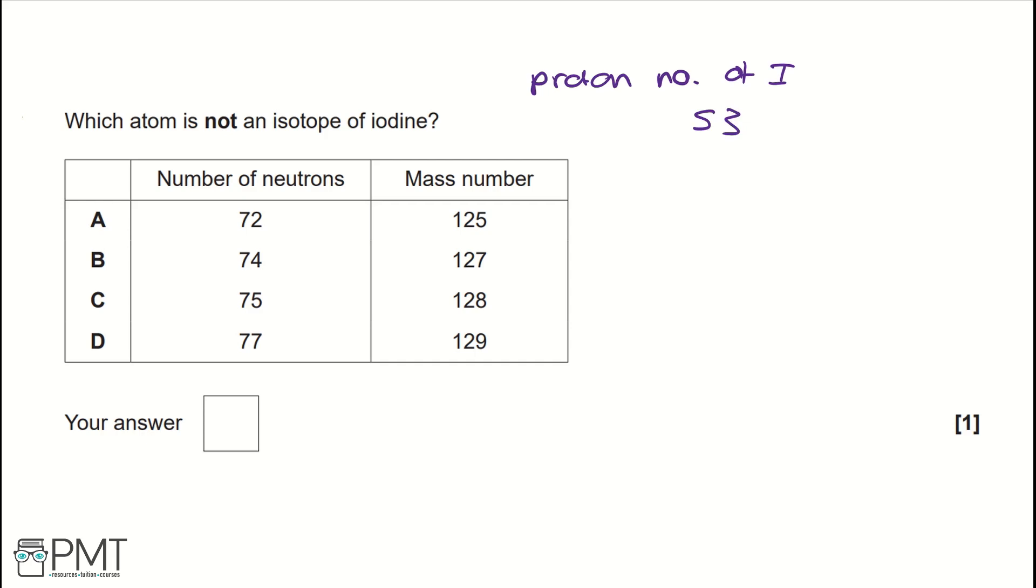So if we take the mass number and minus the number of neutrons, that will give us our proton number. We want it to equal 53 if it is an isotope. If it's not an isotope, it's anything that's not 53.